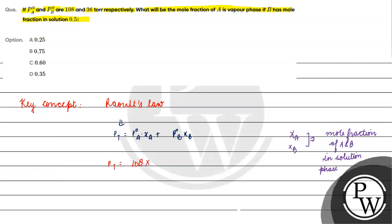What is chi A? Look, we have been given that chi B is 0.5. And we know that the mole fractions, when we sum them, are equal to 1. So if chi B is 0.5, then chi A is 1 minus 0.5, which equals 0.5. So total pressure is 108 into 0.5, plus P0B which is 36, into 0.5.